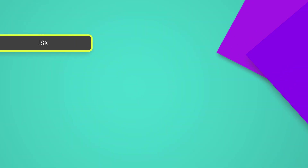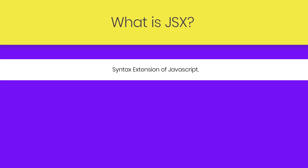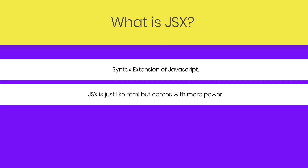Now, once you know how to create a functional component in React, let's take a look at what is JSX. JSX is a syntax extension of JavaScript. React recommends using JSX because JSX is more powerful than HTML. JSX may remind you of a template language, but it comes with the full power of JavaScript. JSX is just like HTML but comes with more power.